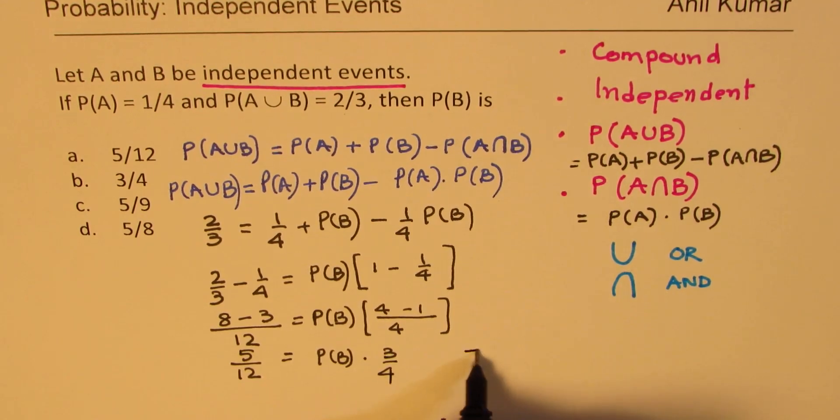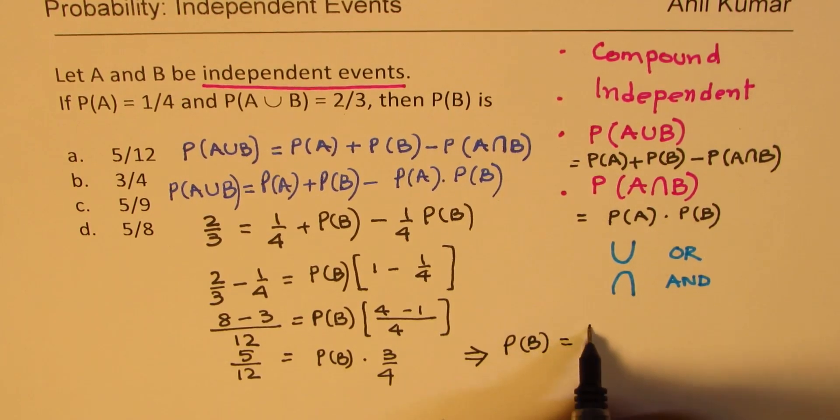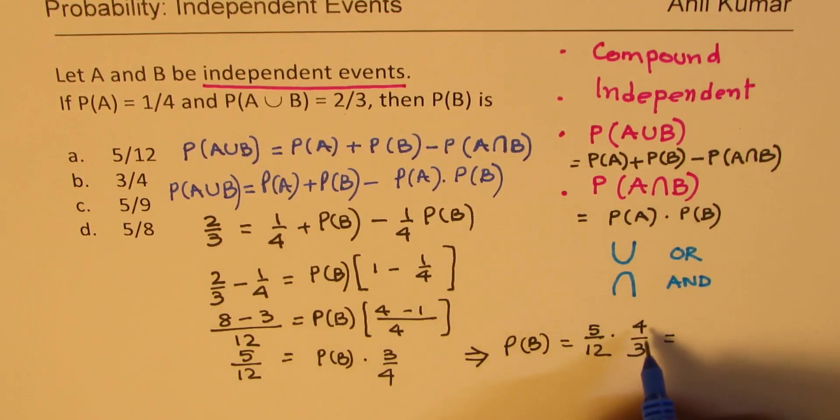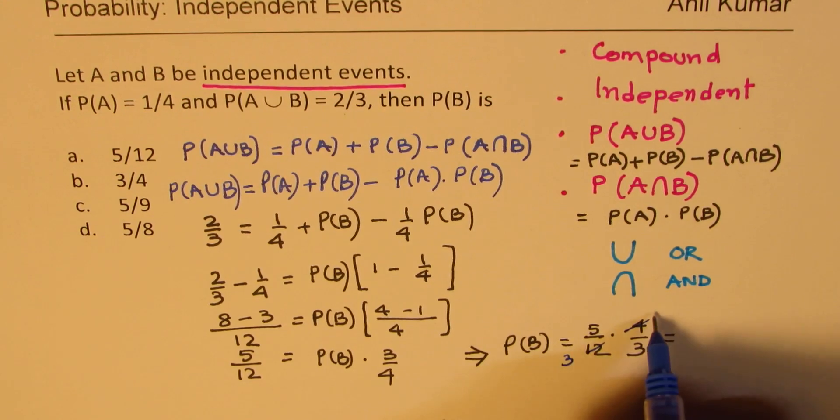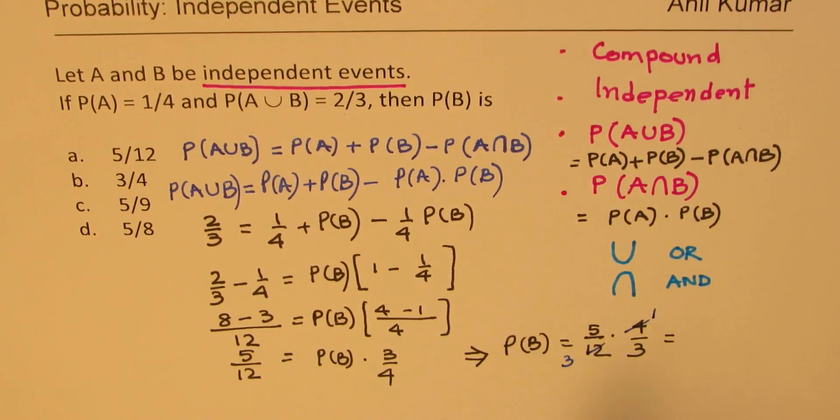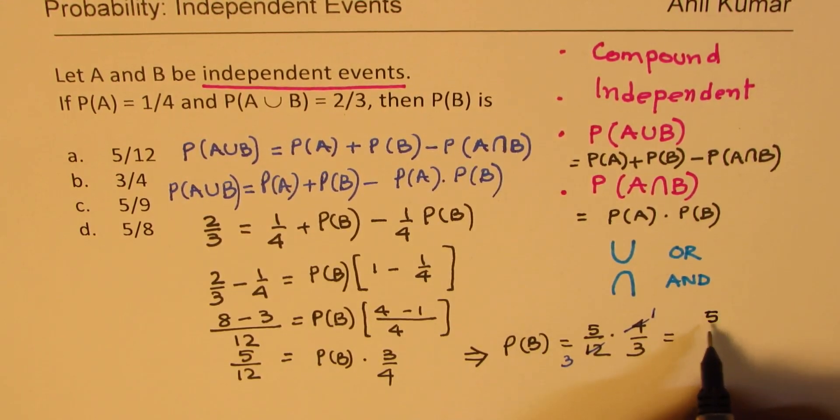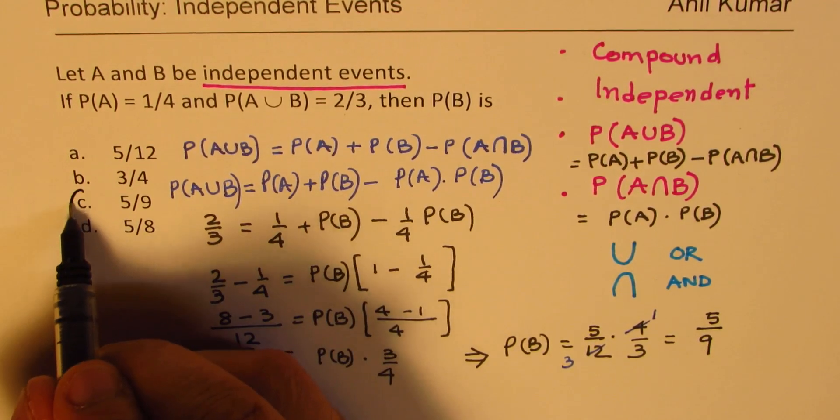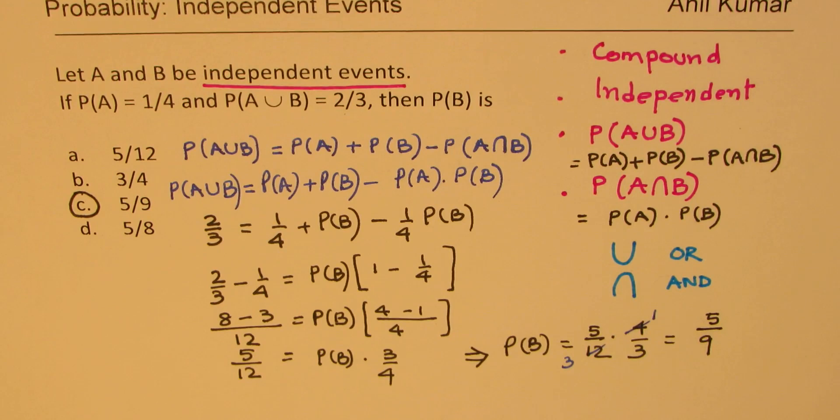That gives us the probability of B as what? We will just cross multiply. 5 over 12 is there, we will multiply by 4, divide by 3. You could simplify this a bit, dividing 12 by 3. And you get your answer, which is 5 over 9. Does it make sense? So, C is the right answer for you. Perfect.